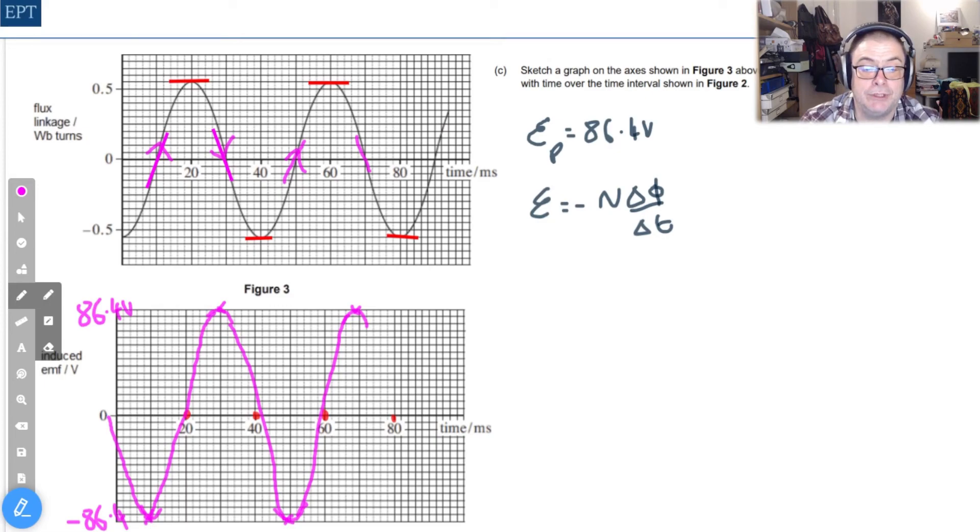So you'll have this shape only of course yours will be much neater than mine. Nevertheless it's clear what the shape is. And I suppose to put the cherry on the cake we should label the axes as 86.4 and indeed minus 86.4. You could pretty much use whatever scale you want on that y-axis there.